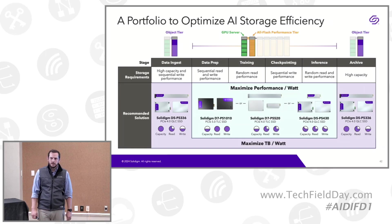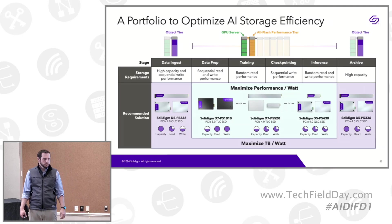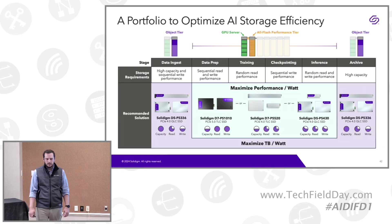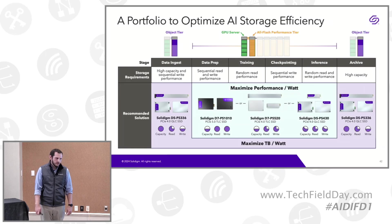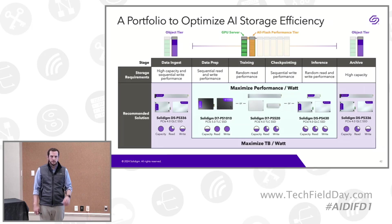The Gen5 drive has screaming random performance as well. If the objective is to keep GPUs maximally utilized, that's the natural recommendation — go Gen5, go with the performance leader. We also have the 5520, our performance-leader TLC drive for Gen4 systems, and the 5430, a QLC drive with improved mixed read-write performance. Any of these are feasible for direct-attached storage in GPU servers.